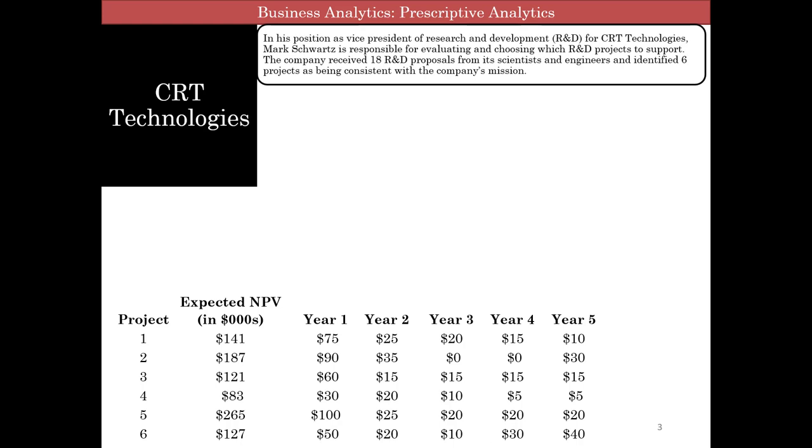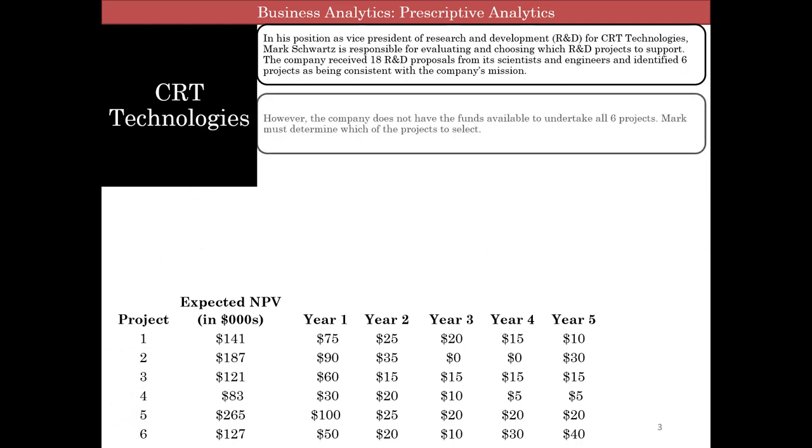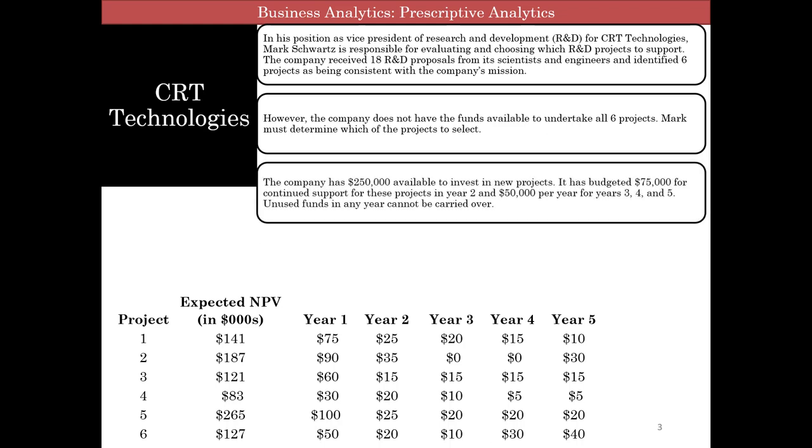So we have this company called CRT Technologies and they are evaluating and choosing R&D projects to support. The company received 18 proposals and identified six of these projects as being consistent with the company's mission. The company does not have the funds available to undertake all six projects, so they have to select which ones. They have $250,000 available to invest in new projects. It has budgeted $75,000 as continued support in year two and $50,000 in years three, four, and five.